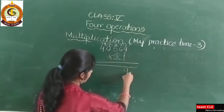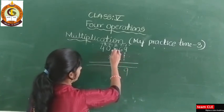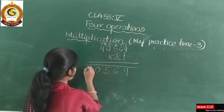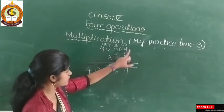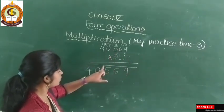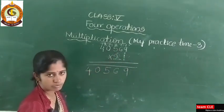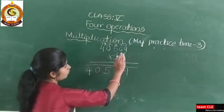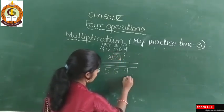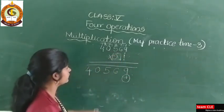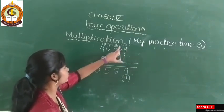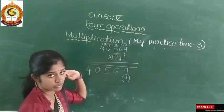One nine is nine, one six is six, one five is five, one into zero is zero, one four is four. Next, once the ones work is over, take the two. For that you have to leave one place. Then multiply again with the ones digit of the number.